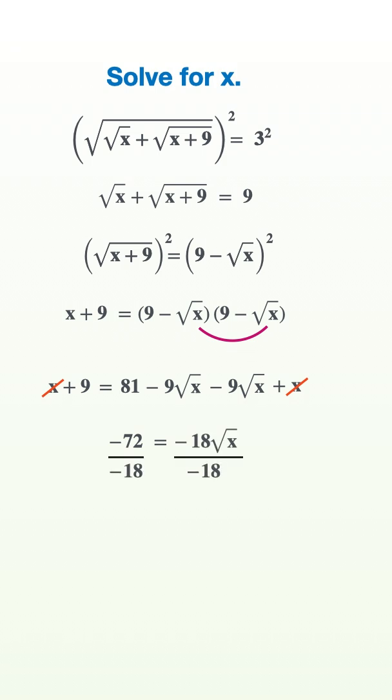Dividing both sides by negative 18 gives us 4 equals the square root of x. Let's square both sides one more time to find that x is equal to 16.